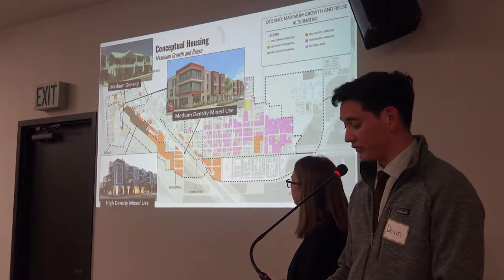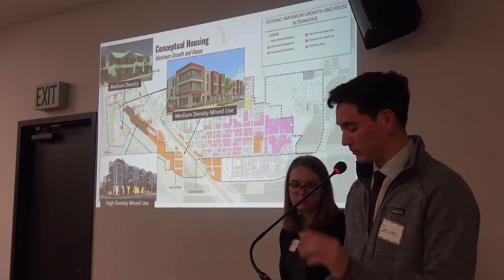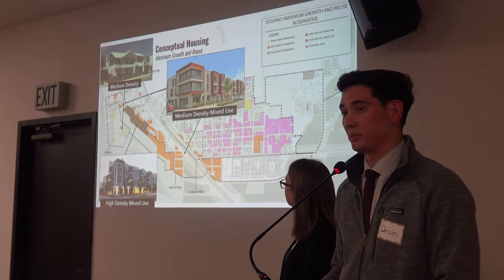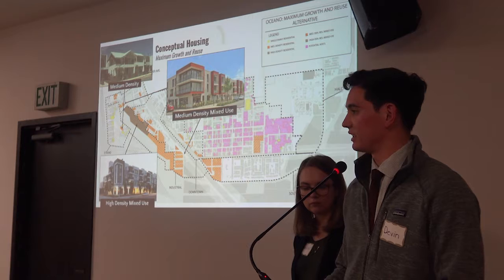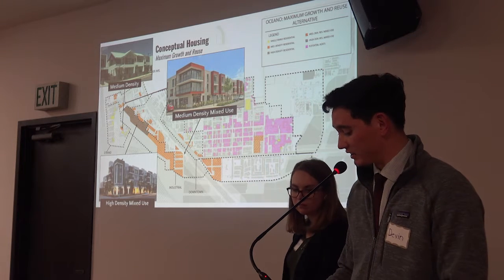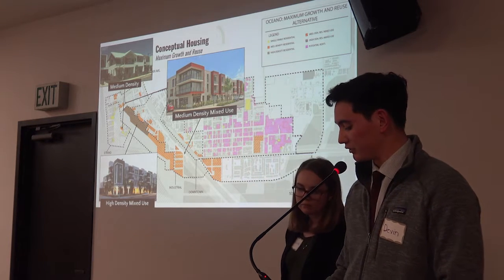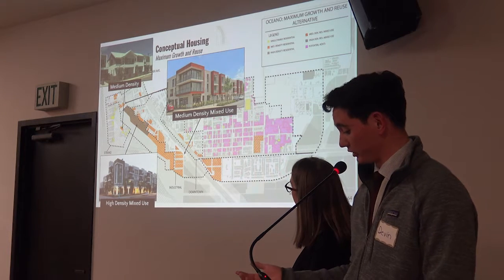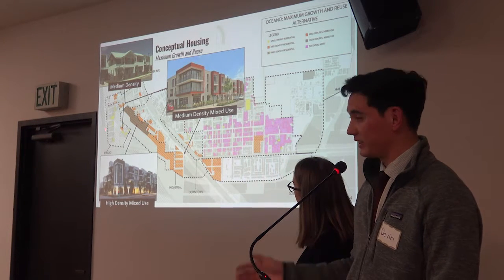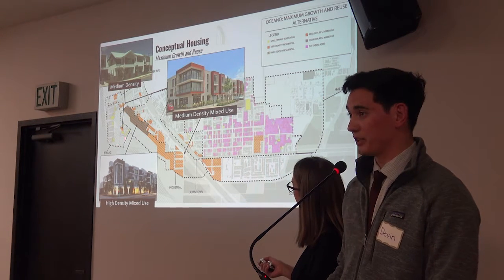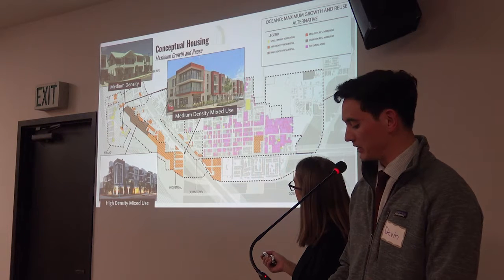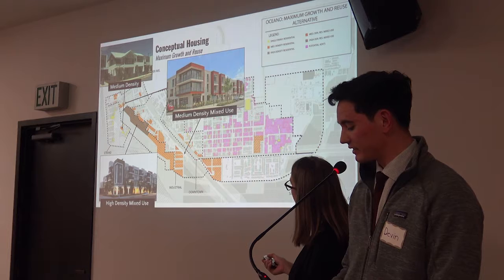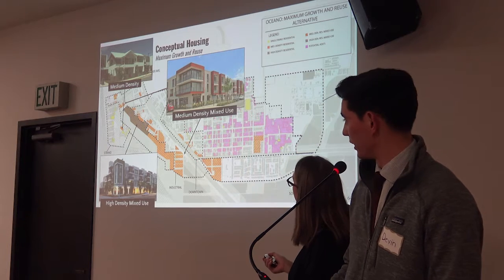With limited space for physical expansion, the maximum growth alternative looks to combine living and working space in medium and high-density mixed-use communities. This map portrays the different types of housing proposed on the west side of Oceano, which includes medium-density housing in the Strand neighborhood, medium-density mixed-use in the Peer Avenue and industrial neighborhoods, and high-density mixed-use in the airport neighborhood.